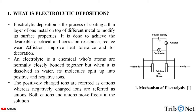What is electrolytic deposition? Electrolytic deposition is the process of coating a thin layer of one metal on top of a different metal to modify its surface properties. It is done to achieve desirable electrical and corrosion resistance, reduce wear and friction, improve heat tolerance, and for decoration.